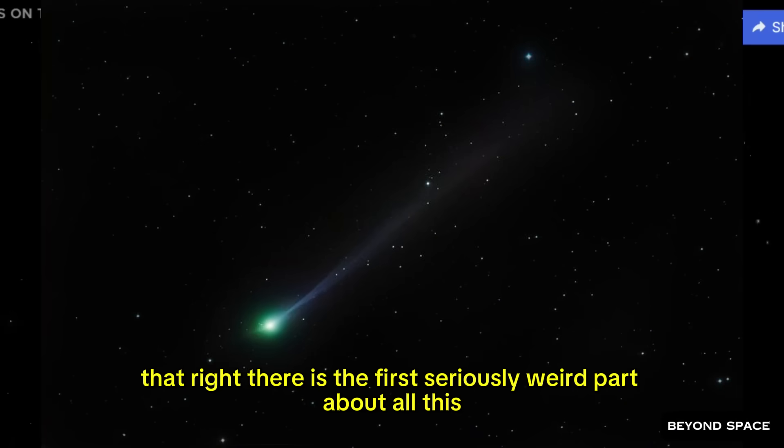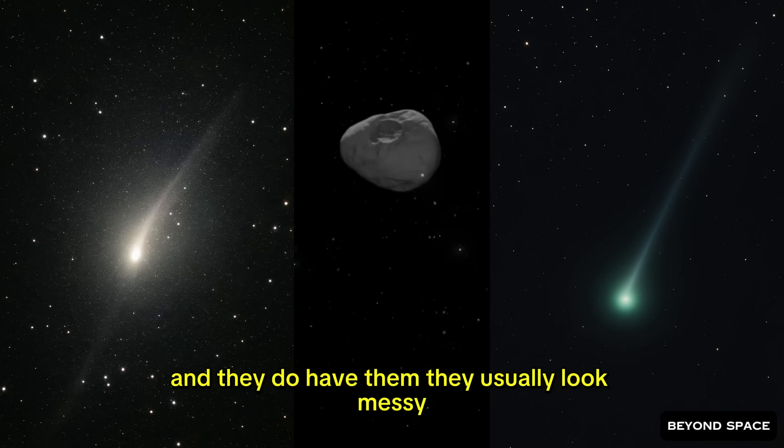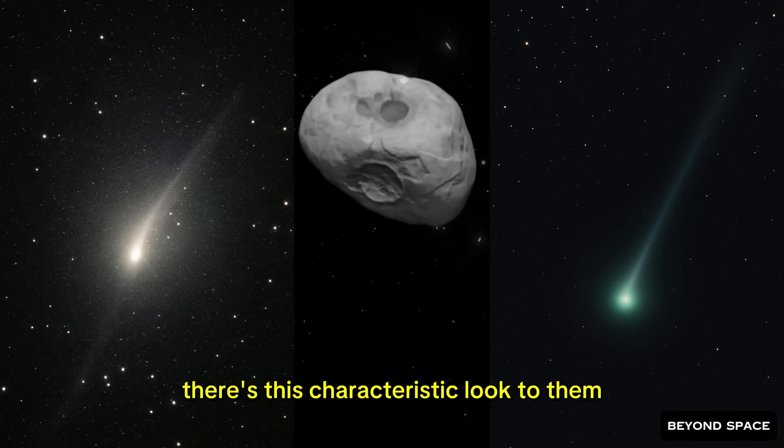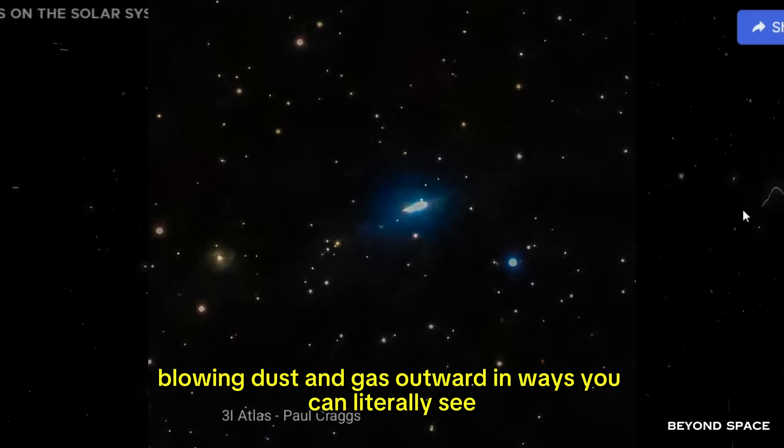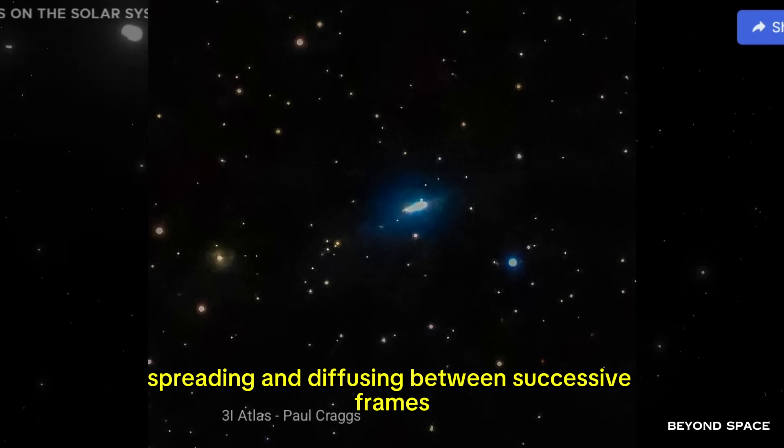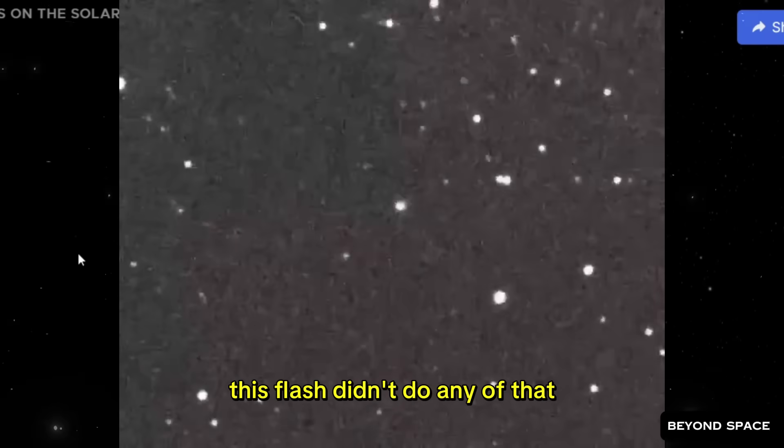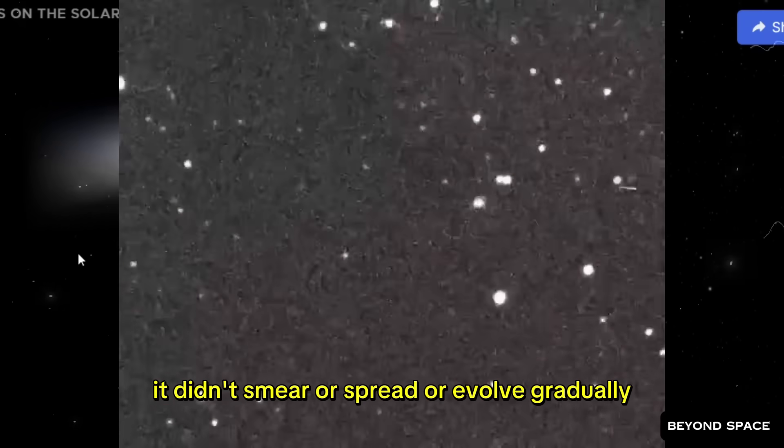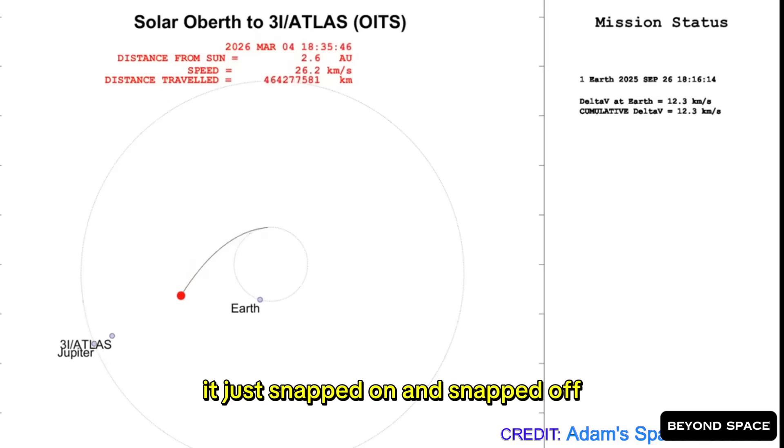There's no slow build up to it. No gradual fade out. Just a sharp spike in brightness. And then it's gone. That right there is the first seriously weird part about all this. When comets have outbursts, and they do have them, they usually look messy. There's this characteristic look to them. They tend to evolve over hours, blowing dust and gas outward in ways you can literally see spreading and diffusing between successive frames. It's gradual. It's visible. It makes sense. This flash? This flash didn't do any of that. It didn't smear or spread or evolve gradually. It just snapped on and snapped off.